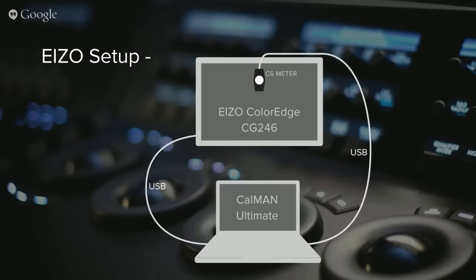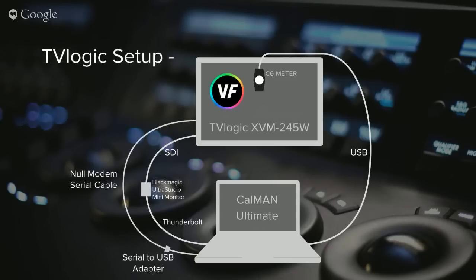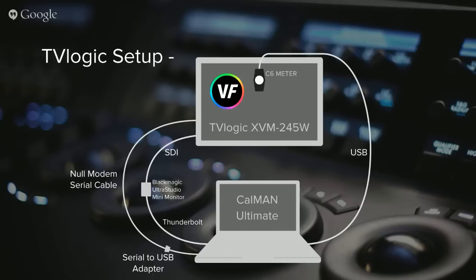After we show you how to create a 3D LUT for the EIZO, we will show you how to create one for the TVLogic XVM series monitor. For the TVLogic, we'll be using CalMAN Ultimate or CalMAN Studio, the SpectraCal C6 meter, VirtualForge pattern generator software, and a Blackmagic mini monitor using its SDI output. The TVLogic is the XVM245W, and we also have a serial-to-USB adapter and a null modem serial cable to connect CalMAN to the monitor's RS232 port.